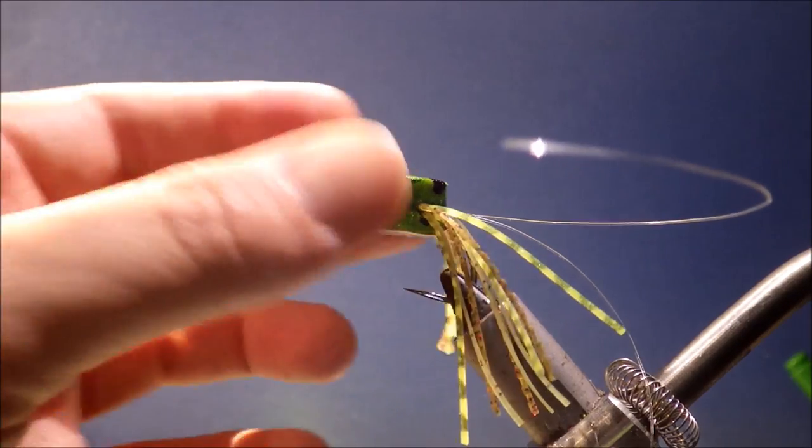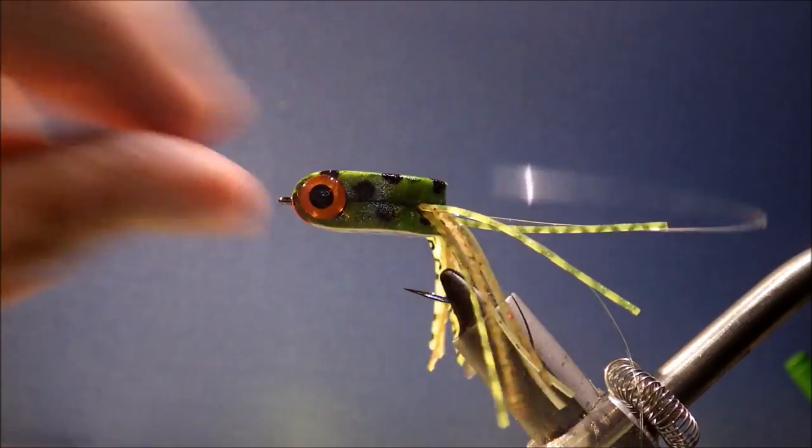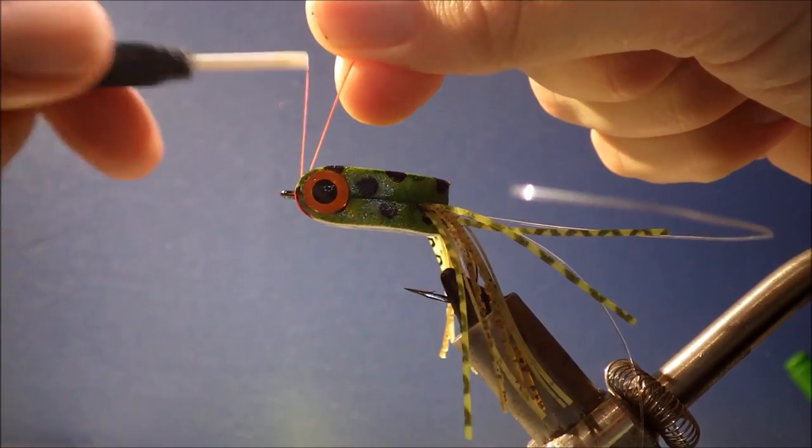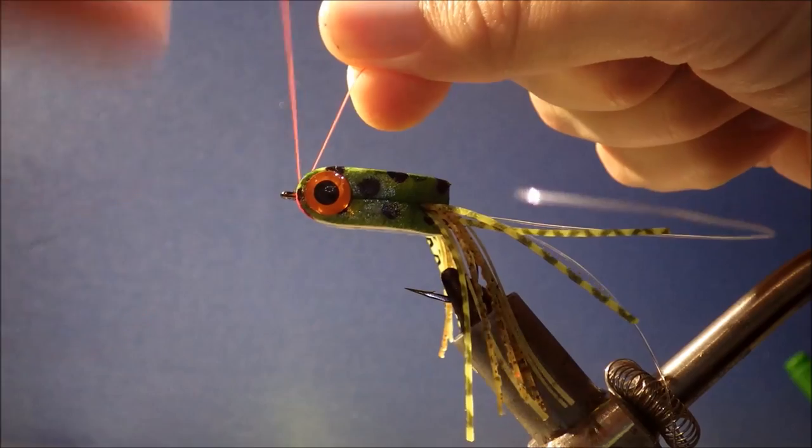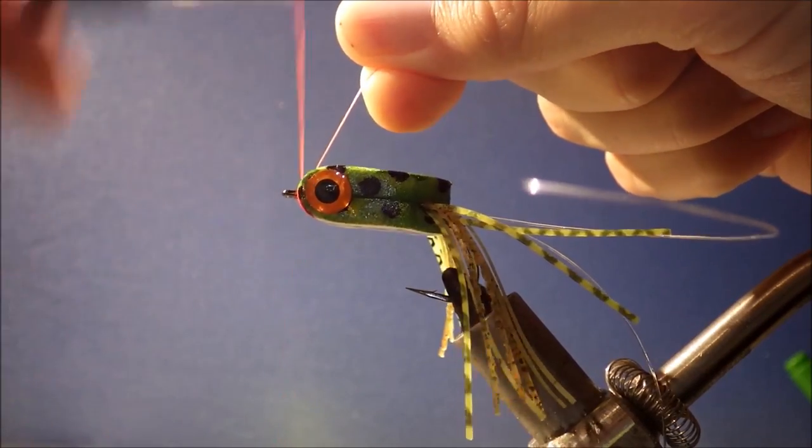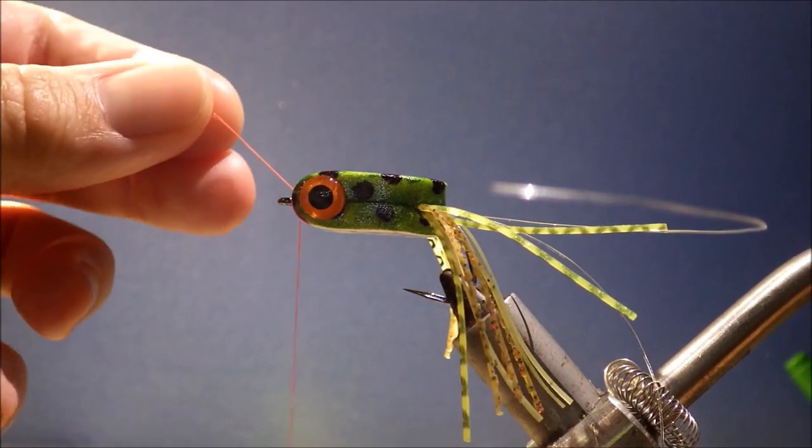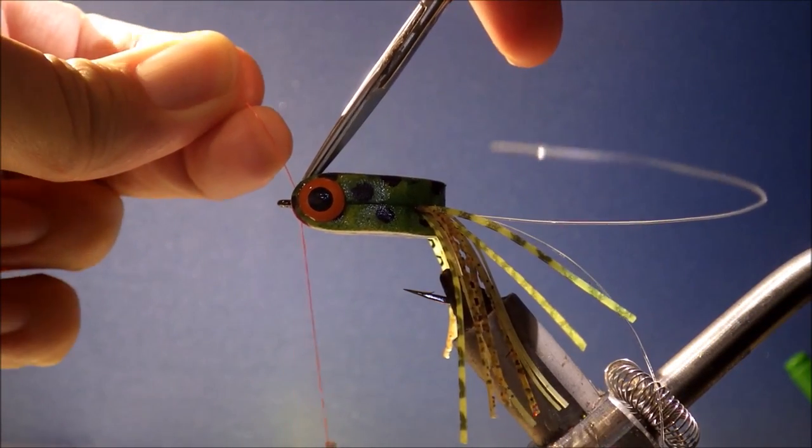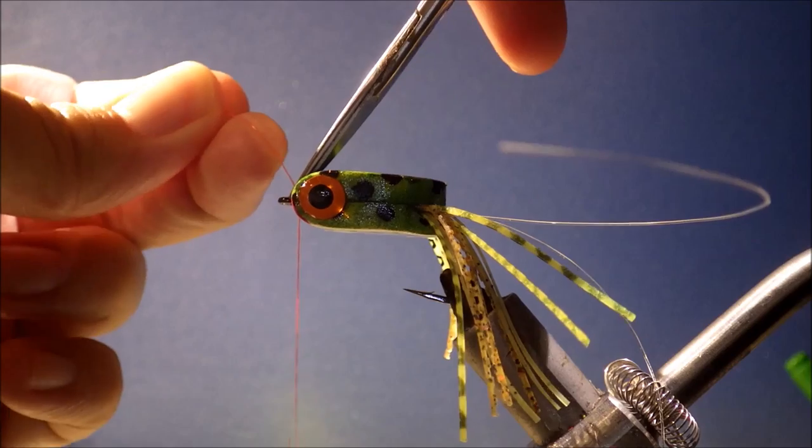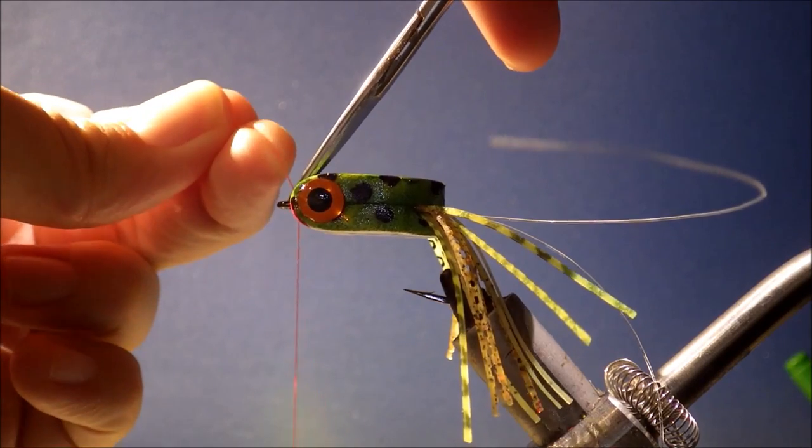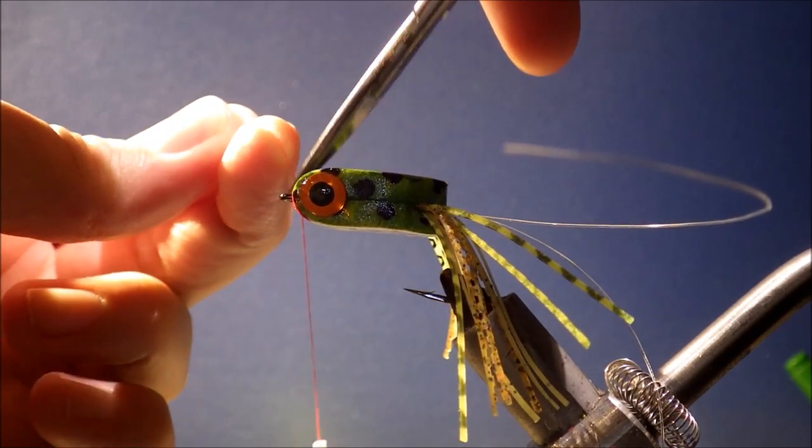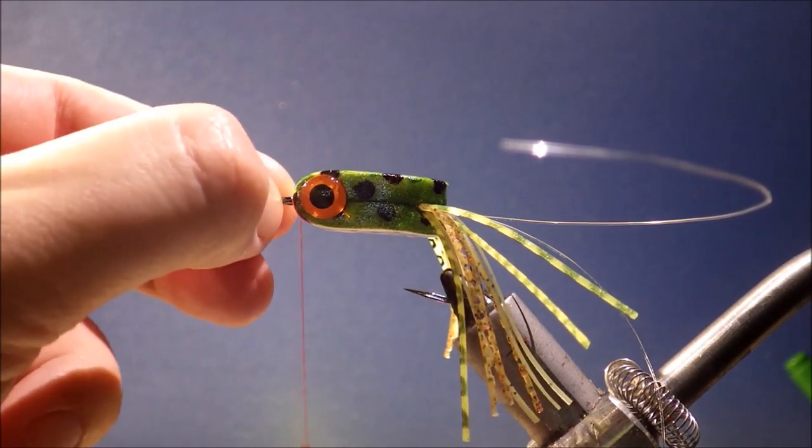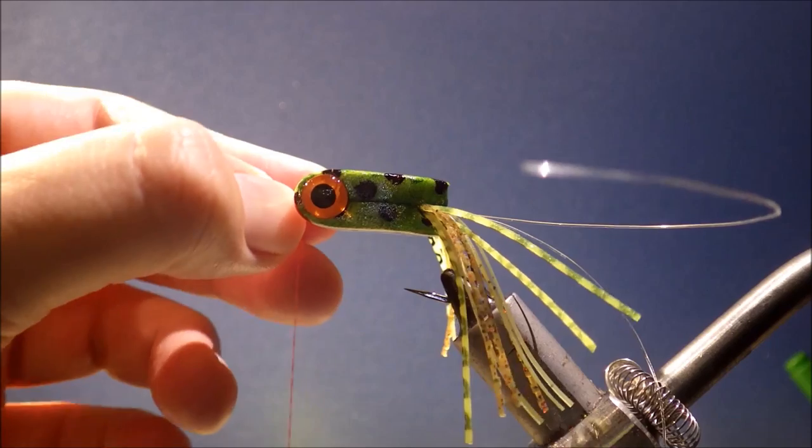Right, so the glue's dry and I'm back just to finish off the fly, and it's just dead simple, it's just to put the weed guard on. So I'm just starting to put on the same thread. This is 3/0 in red, or orange or something, doesn't really matter. Just in the wee space between the eye of the hook and the foam.